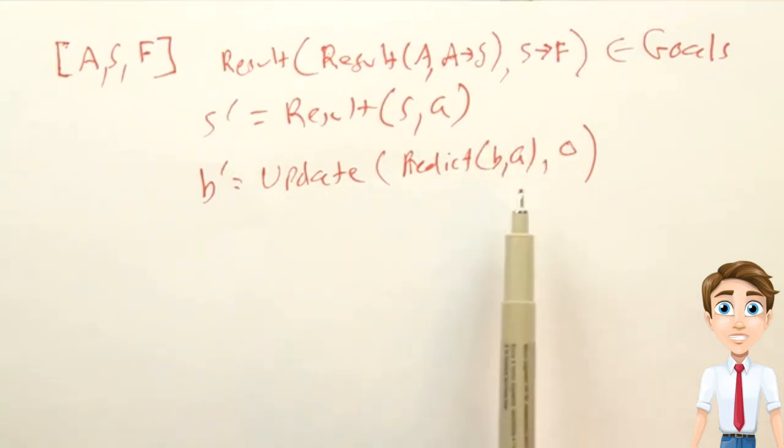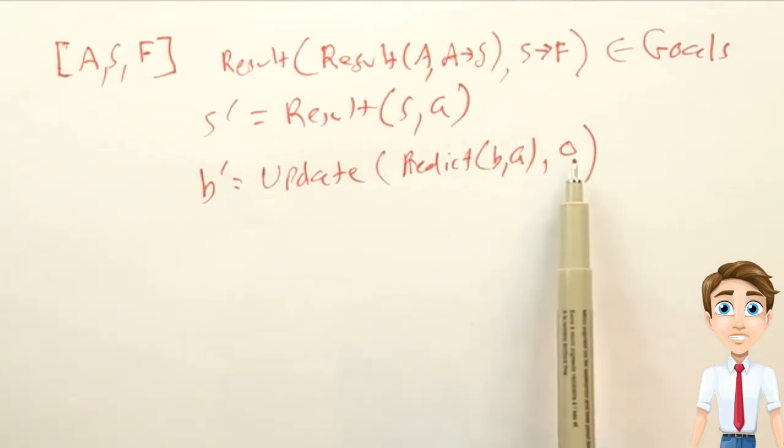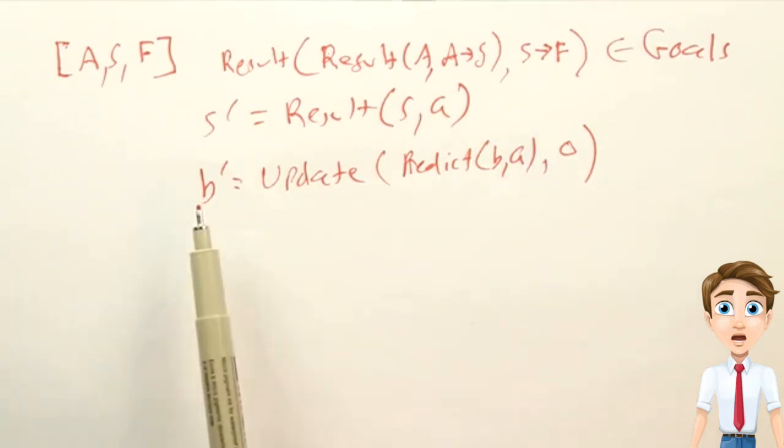To each possible member of the belief state, and so that gives us a larger belief state. And then we update that belief state by taking account of the observation, and that will give us a smaller or same size belief state. And now that gives us the new state. And we can use this predict and update cycle to keep track of where we are in a belief state.